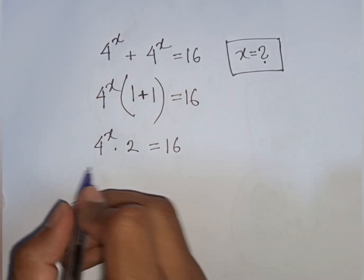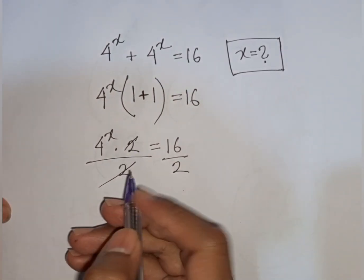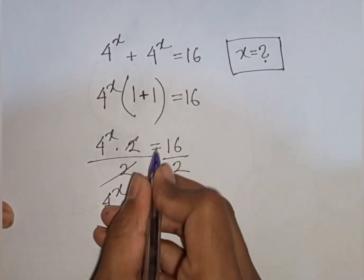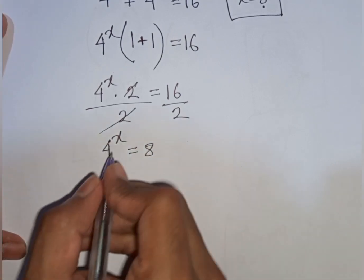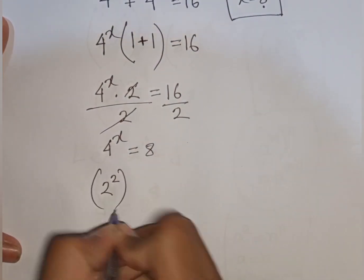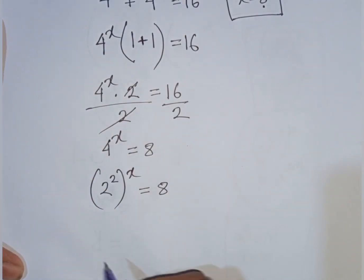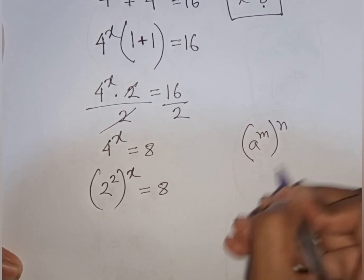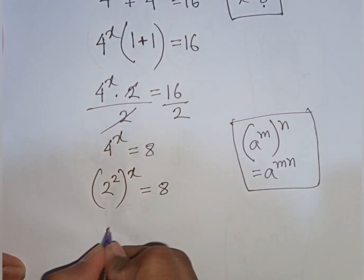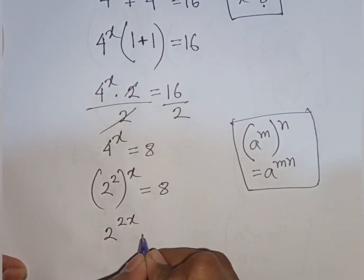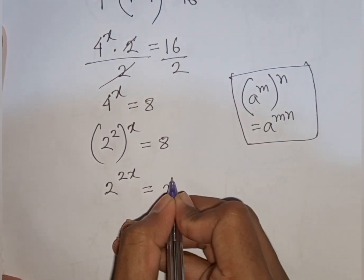We divide both sides by 2, giving 4^x = 8. Now, 4 can be written as 2^2, so (2^2)^x = 8. Applying the rule (a^m)^n = a^(mn), we get 2^(2x) = 8. Since 8 equals 2^3, we have 2^(2x) = 2^3.